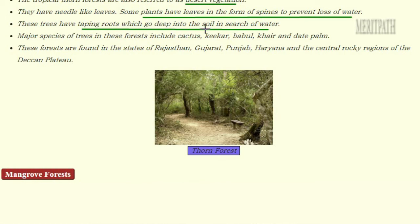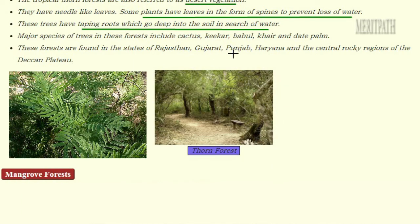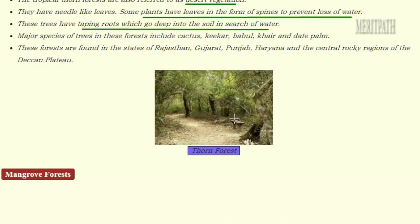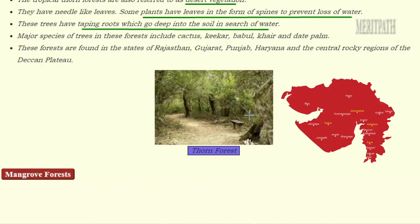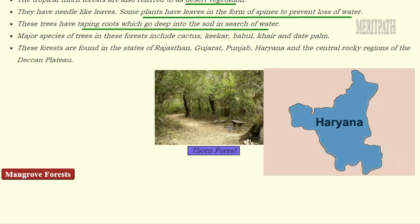The roots of desert plants are also modified — they have very deep tap roots that go deep into the soil to reach underground water. Commonly found trees in these areas are Cactus, Kikar, Babool, Khair, and Deadpam. These forests are found in Rajasthan, Gujarat, Punjab, Haryana, and the Deccan Plateau.